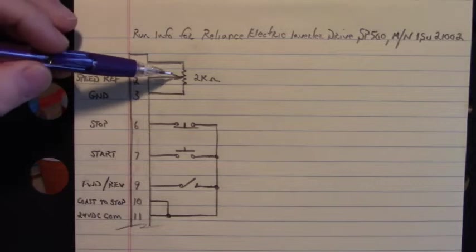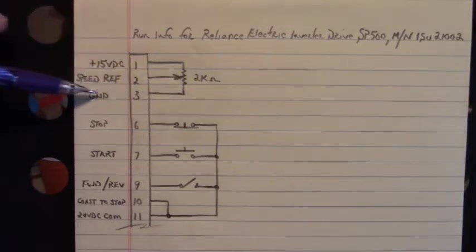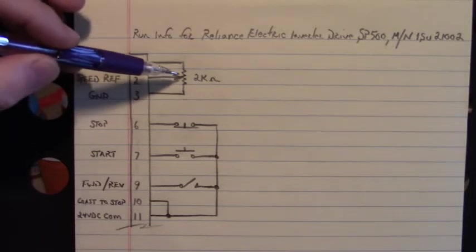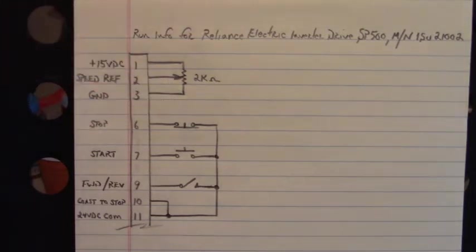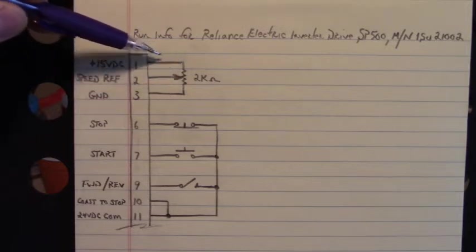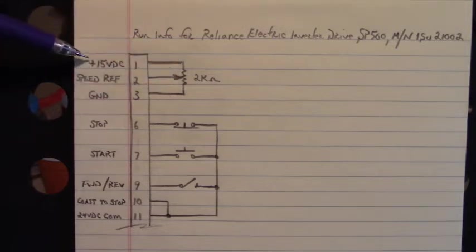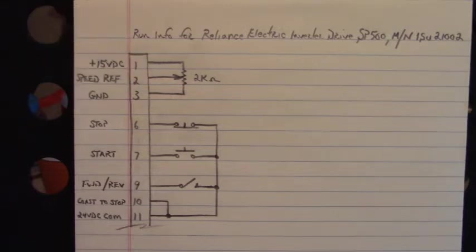When the potentiometer is rotated towards ground, the drive runs slower. And when the potentiometer is rotated up towards plus 15 volts DC, that motor runs faster.